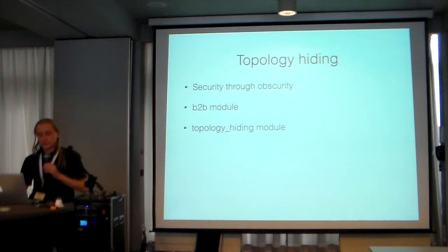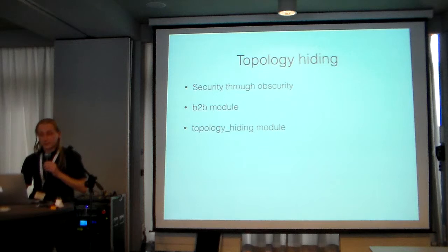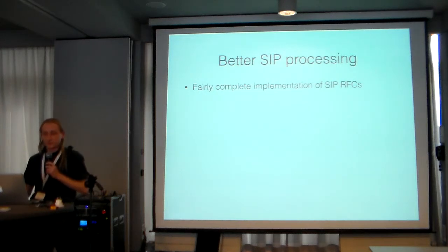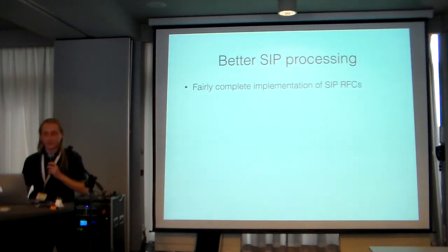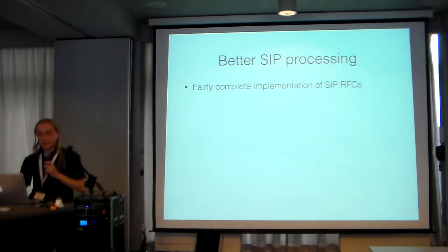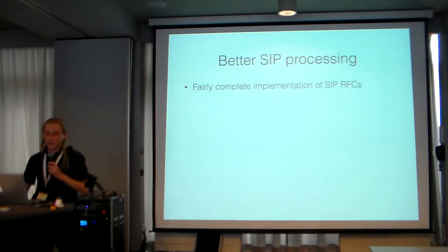Whichever way you choose, using a separate instance that does nothing but topology hiding greatly simplifies your configurations — other instances on either side of the topology hiding instance still just keep working the same way they did before. Now, OpenSIPS provides a very standard-compliant SIP processing engine with a fairly complete implementation of the SIP RFCs. However, don't confuse standard compliancy with rigidity — OpenSIPS is very forgiving and will handle almost anything you throw at it. This means it will be able to communicate with anything that even remotely resembles SIP.